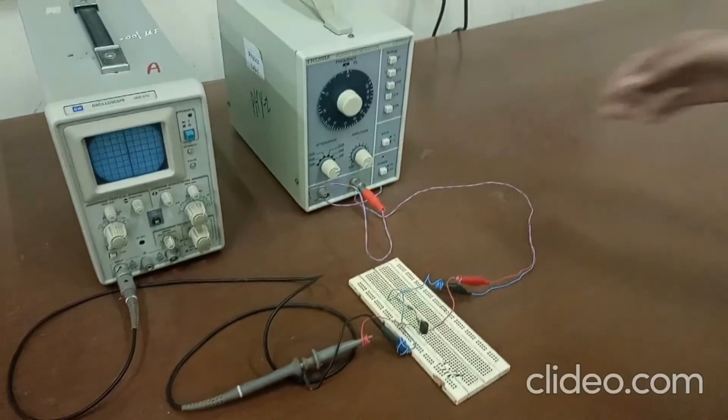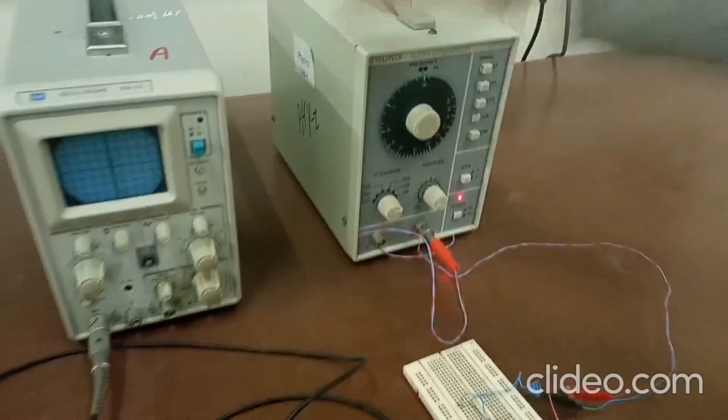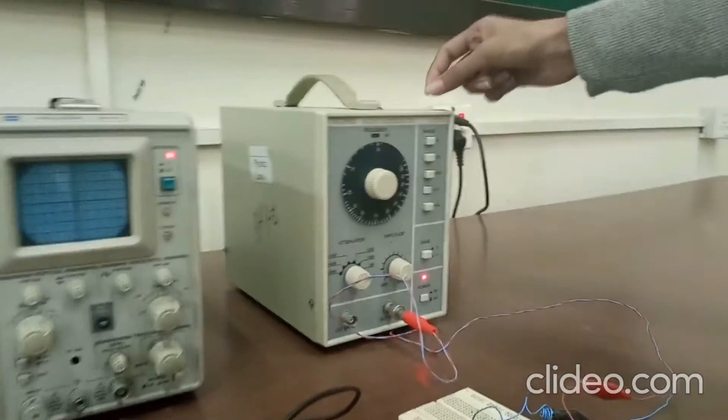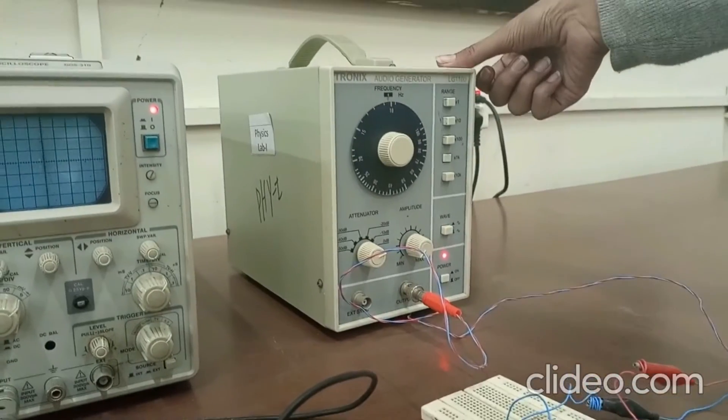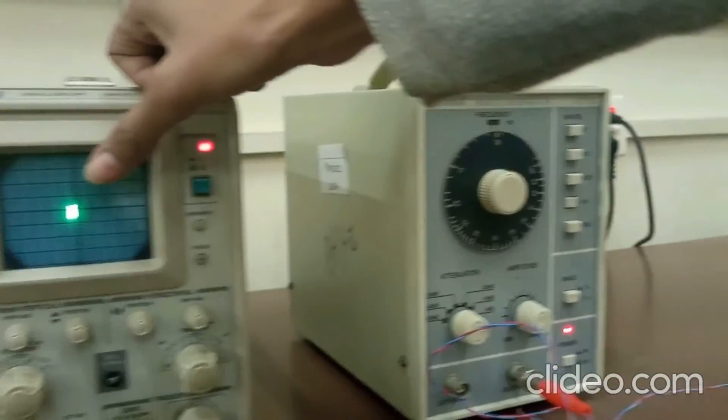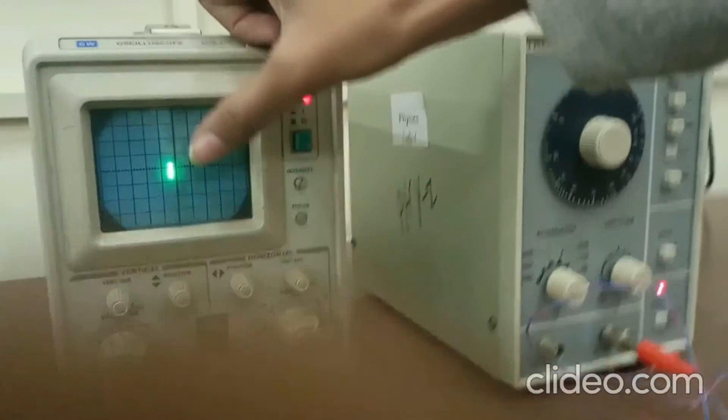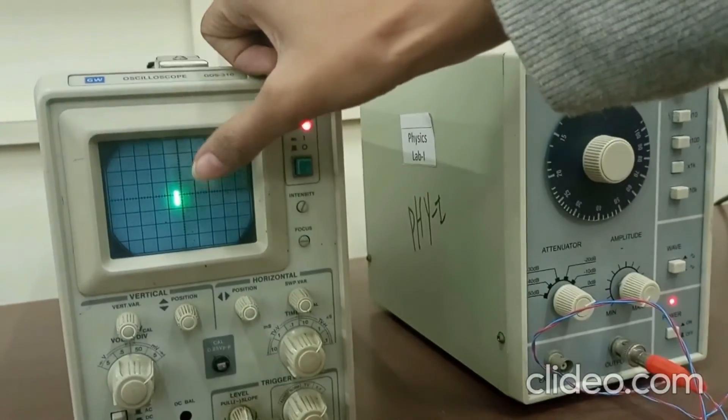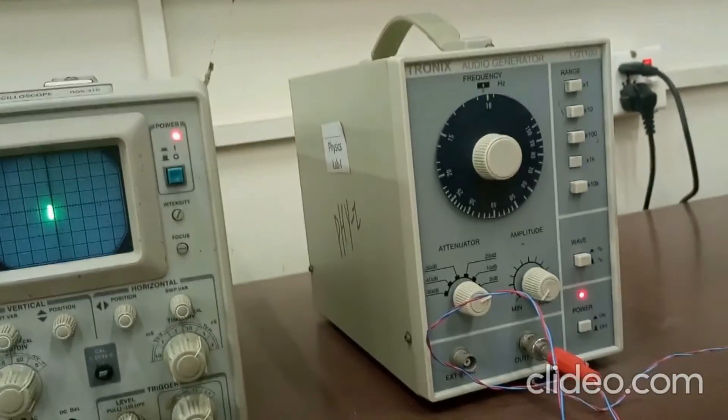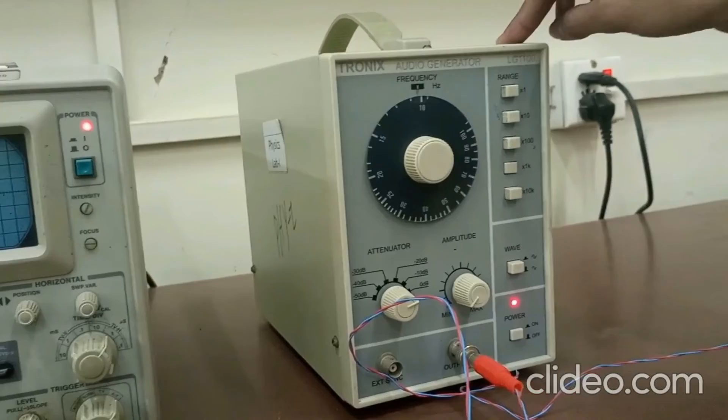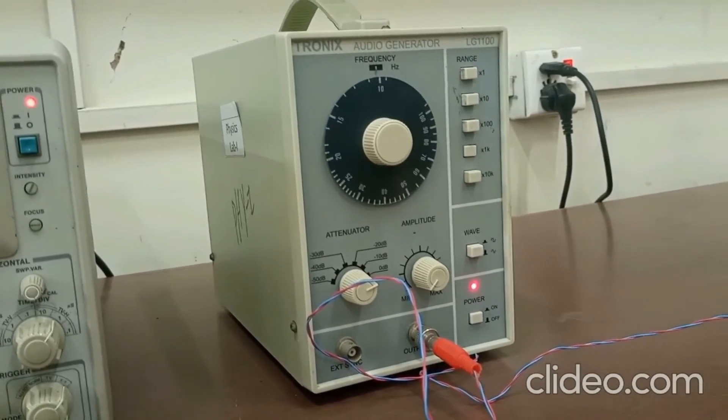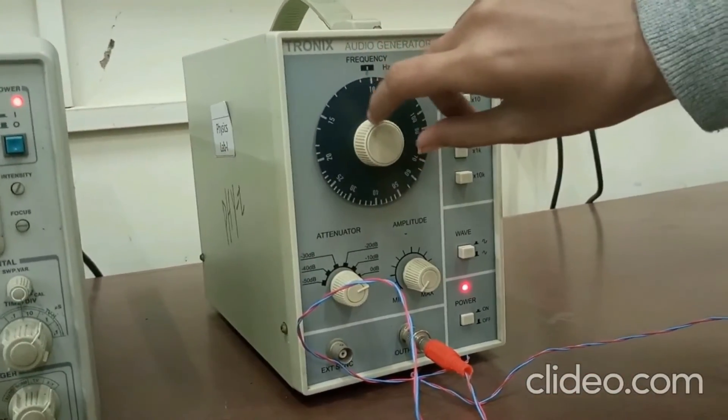Now, what we have to do? We have to apply the frequency from frequency generator and see the amplitude here. As you can see, here the vertical line has been seen. As I discussed earlier, the acceptor circuit accepts the resonant frequency. That's why the maximum current flows on the resonant frequency and the amplitude is high.